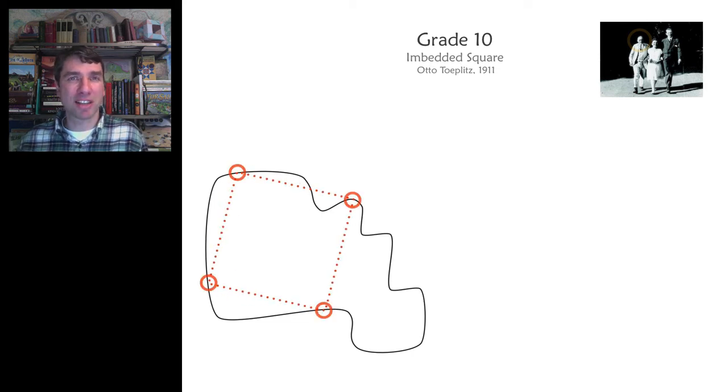So here we've been successful. There is a square. All corners lie on the loop.